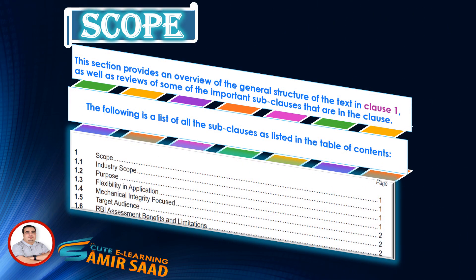In this lecture, we will discuss Clause 1: 1.1 Industry Scope, 1.2 Purpose, and 1.3 Flexibility in Application. This section provides an overview of the general structure of the text in Clause 1. The following is a list of all the sub-clauses as listed in the Table of Contents, and we highlight important information contained in Clause 1 accompanied by the sub-clauses.